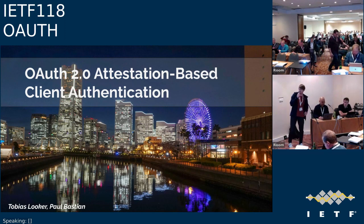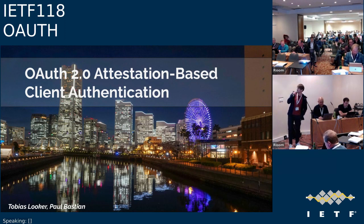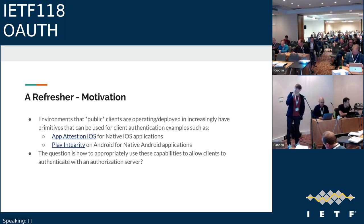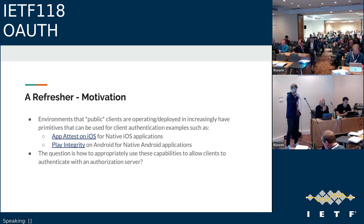Paul introduced attestation-based client authentication, a new draft co-authored with Tobias Looker. The motivation comes from ideas around secure government credential issuance requiring high assurances, using the VC ecosystem with OpenID for VCI as the protocol. Looking at the ecosystem, the concern is that not a lot of people care about the security of the wallet, so the goal is to ensure the issuer can be sure it's talking to a genuine, legitimate wallet and can bind issued credentials to hardware-bound keys — because there are many regulations that can mostly only apply if you have very high assurances and some kind of hardware binding.